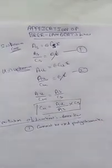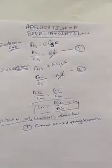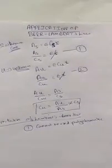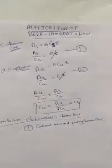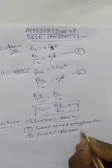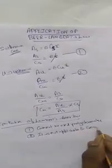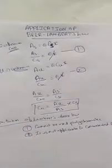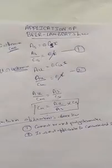Monochromatic light means light with only one wavelength; polychromatic light means the light contains more than one wavelength. Beer-Lambert's law requires monochromatic light. The second limitation is that it is not applicable to concentrated solutions — only to dilute solutions. Basically, if the absorbance goes above 1, the law is not useful.